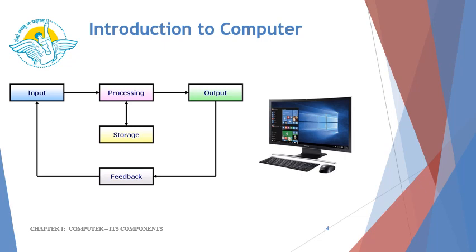This slide shows the illustration of the IPO cycle. The raw data is input into the system using input devices, which is further given for processing. The processing devices of the system process the raw data to give meaningful information. This meaningful information is given to the output device for display or for the hard copy. The storage devices of the system store the intermediate or processed data while being processed.